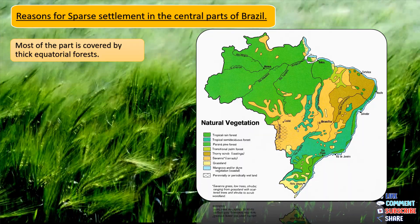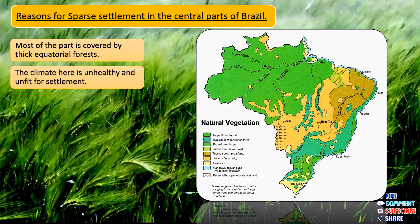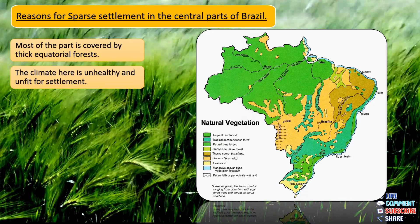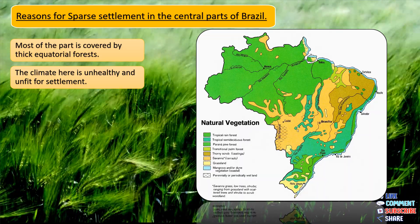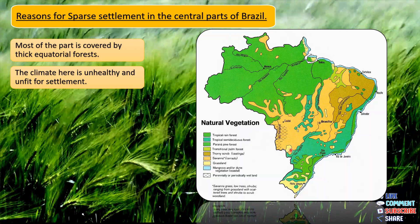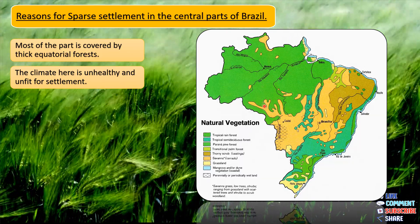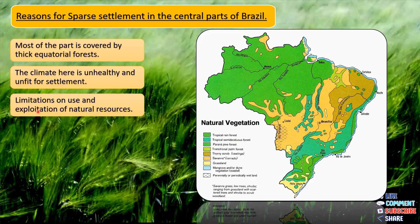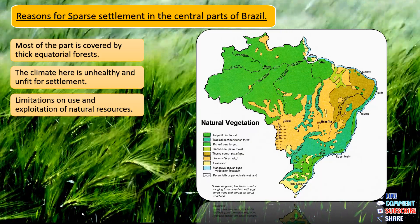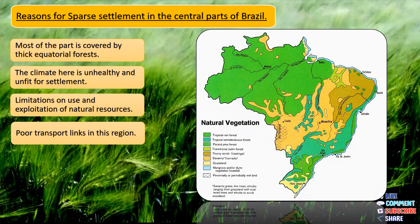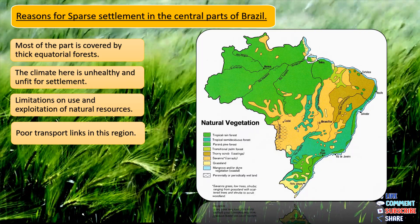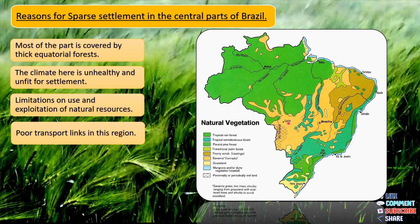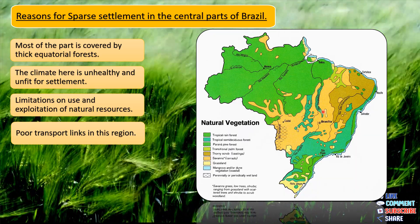The second reason is that the climate here is unhealthy and unfit for settlement. We already know that the climate in most parts of Brazil is hot and humid, and that makes it very unfavorable, especially in these areas. The third reason is limitations on use and exploitation of natural resources. The last reason is poor transport links in this region — transportation is concentrated more in the coastal areas than in the central parts of Brazil because of the uneven topography.